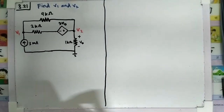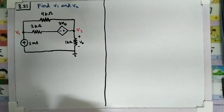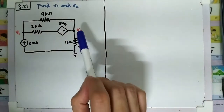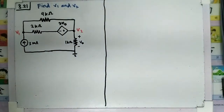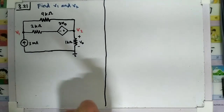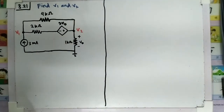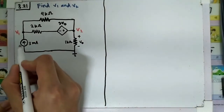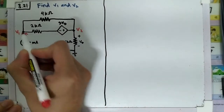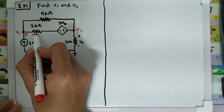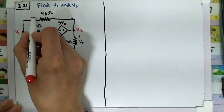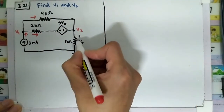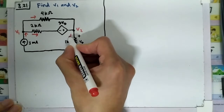We are going to solve problem 3.21 from the Salig book. The question is: find v1 and v2 using nodal analysis. We start by assuming current directions — the current from the current source going up, this one going to the right, this one also going to the right, and this one going down.